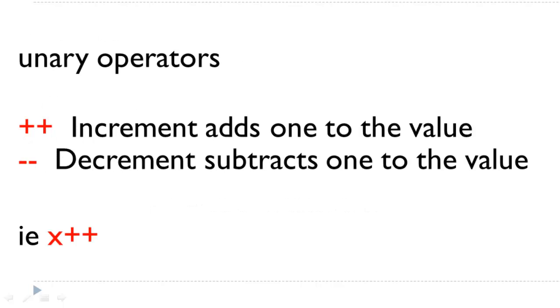We also have what are called unary operators. The plus plus, which adds or increments one to the value. The minus minus, which subtracts one from the value. So the expression x plus plus would increment the value of x by one. Notice there is no equal sign in this type of operator.